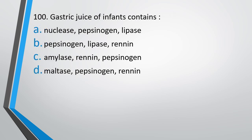Question number 100. The gastric juice of infants contains: nuclease; pepsinogens, lipases, renin; amylase, renin, pepsinogen; or maltase, pepsinogen, renin. The correct answer is option B — pepsinogens, lipases, and renin.